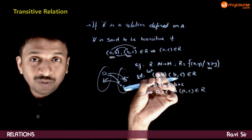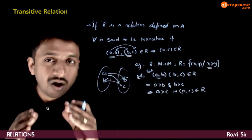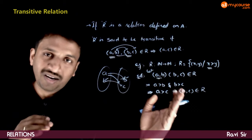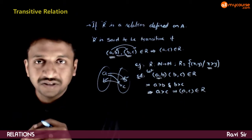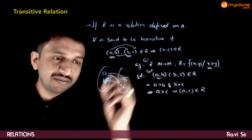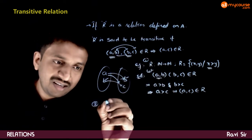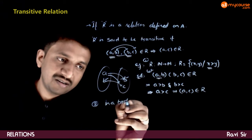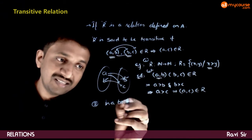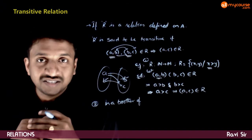We assumed that (A, B) and (B, C) belong to R, and we can confidently prove that (A, C) also belongs to R. Hence this is a transitive relation. Let us take another example which we have already seen: 'is a brother of.' Is it a transitive relation?